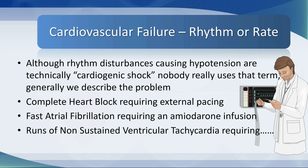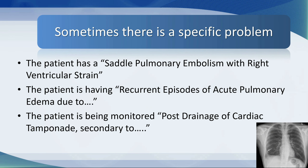Generally, we describe the problem. Complete heart block requiring external pacing or a temporary wire. Fast atrial fibrillation requiring an amiodarone infusion. Runs of non-sustained ventricular tachycardia requiring whatever drug you might decide to use. Sometimes there is a specific problem — for example, the patient has saddle pulmonary embolism with right ventricular strain. The patient is having recurrent episodes of acute pulmonary edema due to diastolic heart failure, airway obstruction, etc. The patient is being monitored post-drainage of cardiac tamponade secondary to a specific pathology.